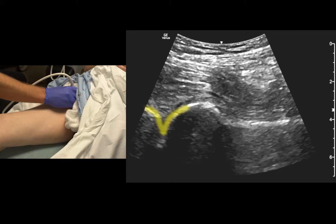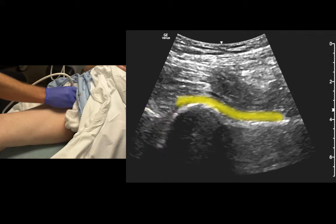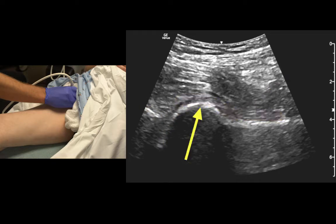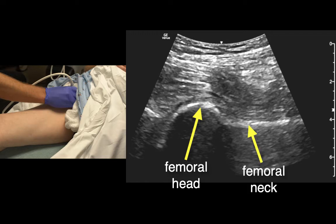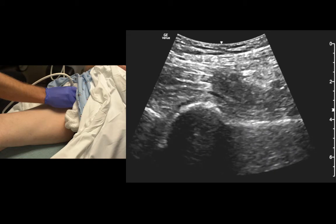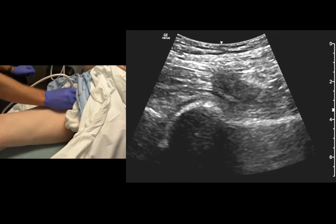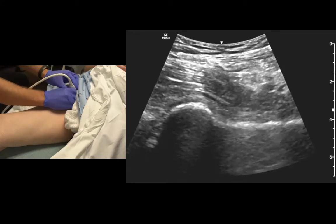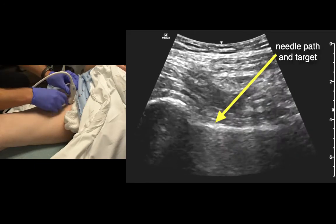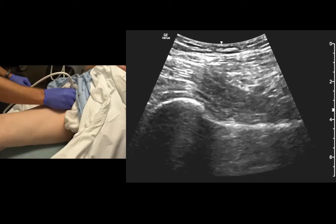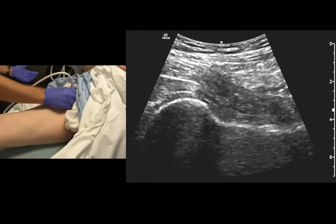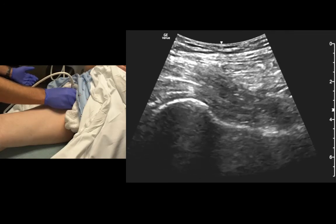The joint space is up top, but the synovial capsule extends all the way down to the femoral neck. Above the femoral neck is where we look for abnormal fluid, and if we were going to tap it, we could guide our needle just like this. That's really it for the hip — pretty straightforward. There's obviously no fluid here.